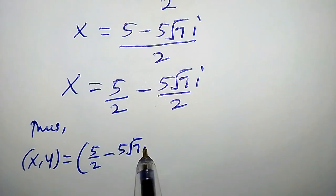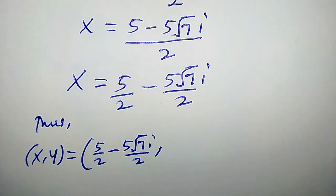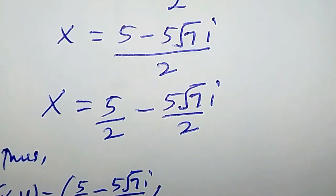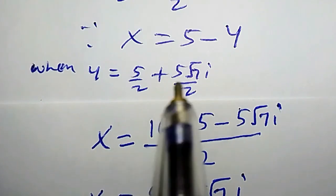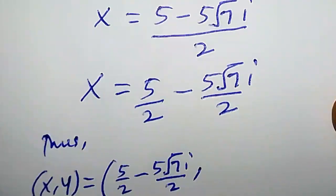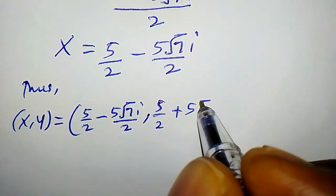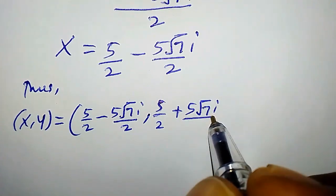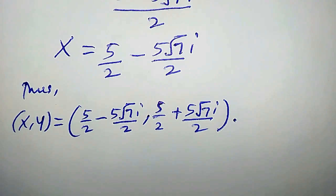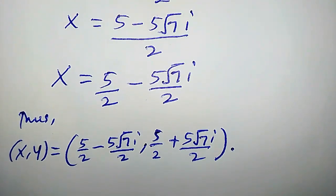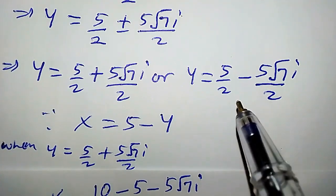Thus the first solution (x, y) is equal to: x equals 5 over 2 minus 5 root 7i over 2, and y equals 5 over 2 plus 5 root 7i over 2. Now let us consider the other value of y, which is when y equals 5 over 2 minus 5 root 7i over 2.